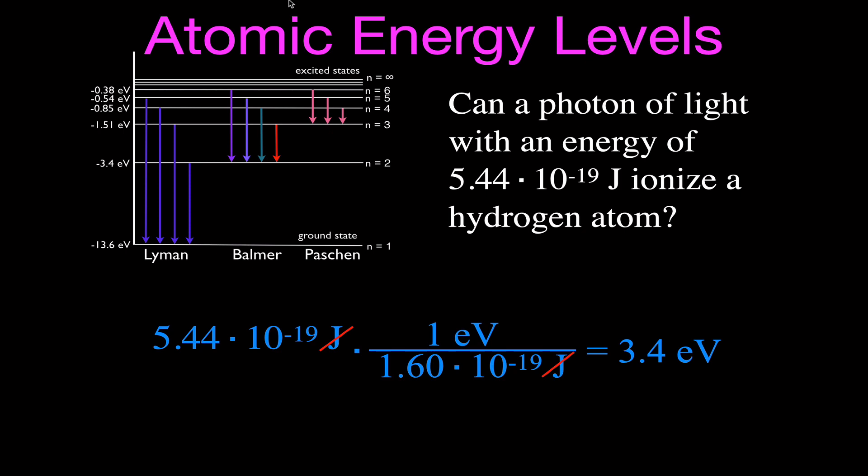So there you go — we covered a thorough description of what an electron volt is, and then did two examples showing how to use the conversion factor to convert between electron volts and joules. Thank you very much for watching; I hope you found that video helpful.